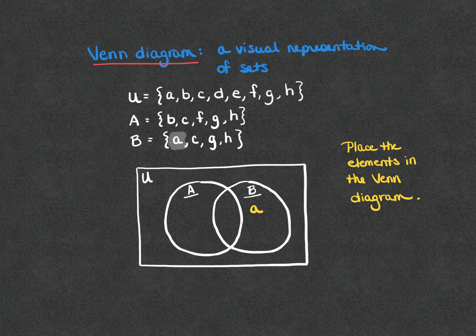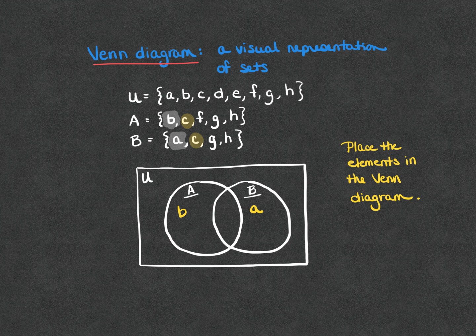Next, let's look at element B. Notice that element B is in subset A and subset A only, so element B belongs there in set A only. When we move on to element C, notice that C is in both A and B, which means that element C belongs in the intersection of set A and set B.